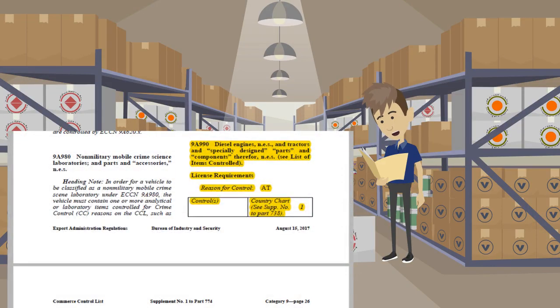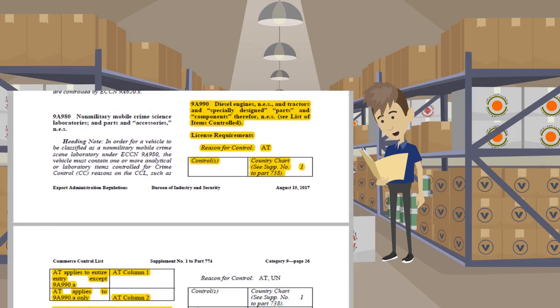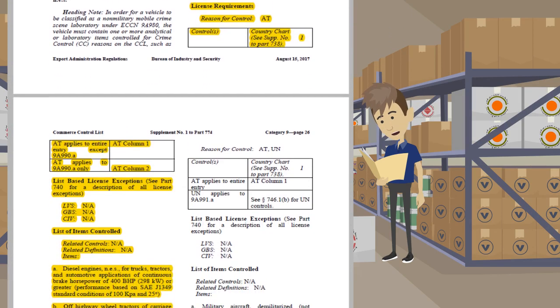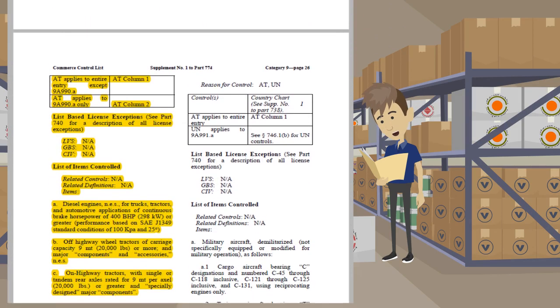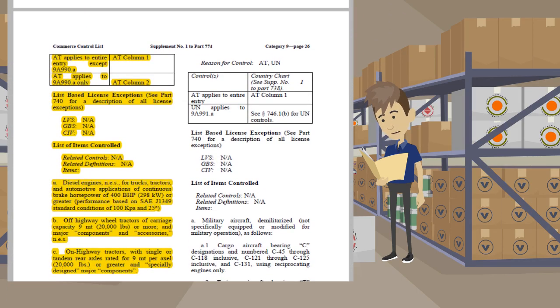9A990 — diesel engines. My engines are far below the performance standards listed in subparagraphs A, B, or C.